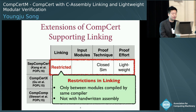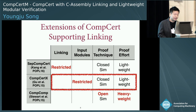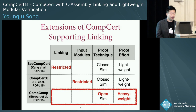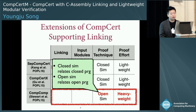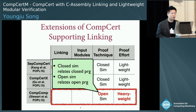On the other hand, CompCertX and Compositional CompCert fully support linking with modules such as handwritten assembly. CompCertX supports fully general linking but still uses closed simulations, which keeps its proofs lightweight. This is possible because it restricts its input source modules: they are required to be verified against certain specifications and should have no mutual dependence between them. Compositional CompCert fully supports both linking and input modules without any restrictions. As a result, it cannot use closed simulations, and instead uses a more general technique called open simulation. Open simulations handle open programs by proceeding the simulation argument only for the known code, while conservatively assuming possible behaviors for the unknown code. However, to compose open simulation proofs for different passes, Compositional CompCert introduces certain restrictions and complexities, making the proofs more heavyweight.